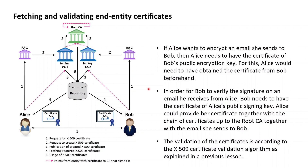Before Bob uses the certificate of Alice, Bob as well needs to validate the authenticity of the digital signature verification key, and this is again just Bob validating the obtained certificate based on the X509 certificate chain algorithm as explained in a previous lesson. If the validation of the signature certificate of Alice is successful, Bob is then good to take the key contained in the certificate to validate the digital signature provided on the email received from Alice. If the validation of the digital signature of the email succeeds, Bob can then conclude that the email was indeed sent by Alice.